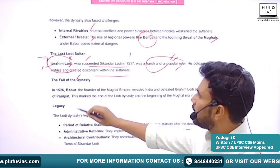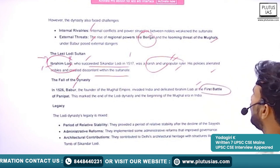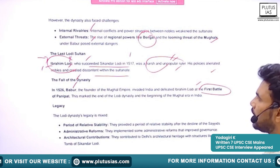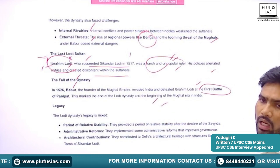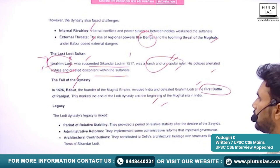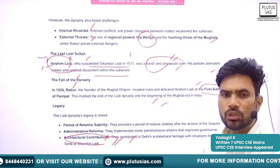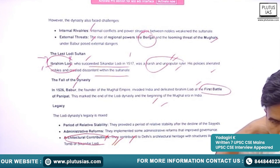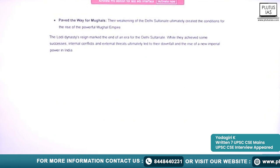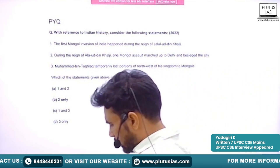Ibrahim Lodi invited Babur to fight against the Rajputs. Once the Rajput rulers were defeated, Babur himself invaded Ibrahim Lodi — who had actually invited him. Ibrahim Lodi's policies also alienated nobles and created discontent within the Sultanate. In 1526, Babur invaded India and defeated Ibrahim Lodi at the first Battle of Panipat in 1526, thereby establishing the Mughal Empire in India. The Lodhis also contributed to art and architecture. This concludes all five dynasties of the Delhi Sultanate period.